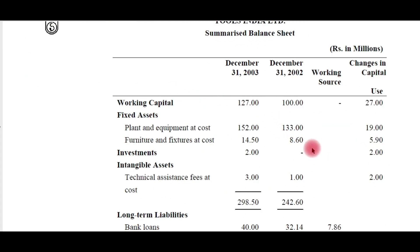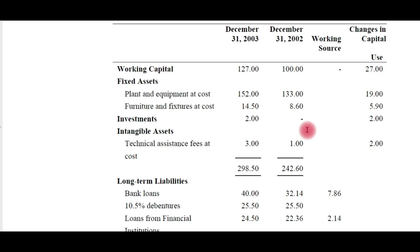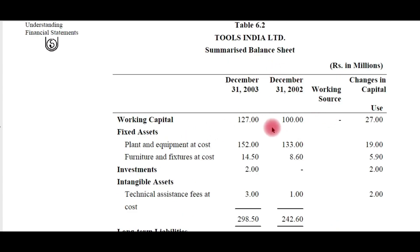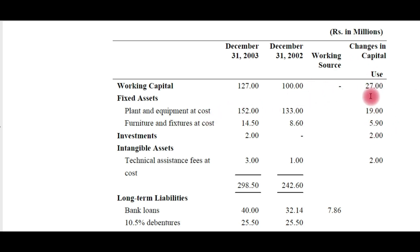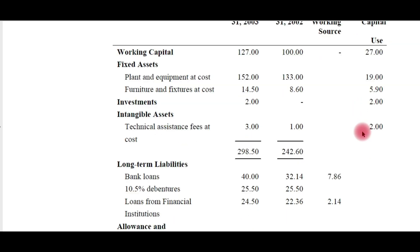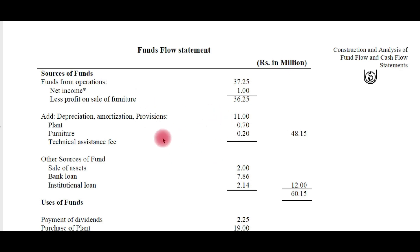Here is an example using a comparative balance sheet at two different dates — December 31, 2002 and December 31, 2003. Different items are mentioned and for each item the change is noted. Plant and equipment at cost is increasing, meaning new machinery has been purchased. Furniture and fixtures at cost is increasing from 8.6 to 14.5, meaning new machinery or furniture has been bought by the company — funds are being utilized.